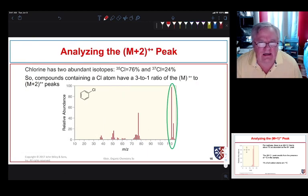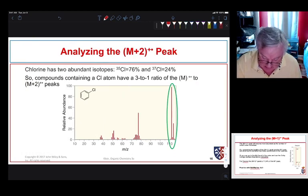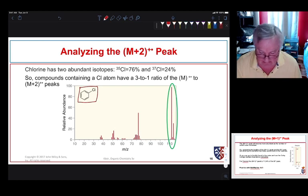Why would we get an M plus 2 peak? So sometimes we can look at things, and for this particular compound we're looking at chlorobenzene, and what we see is here's our M plus peak. We see an M plus 1 peak, which we expect, it's very small, but look at this.